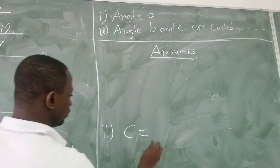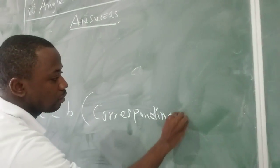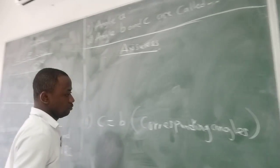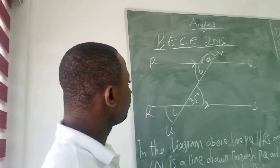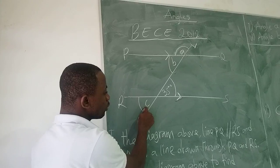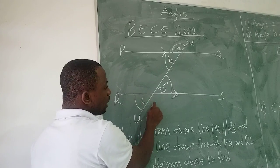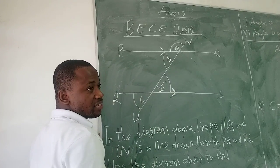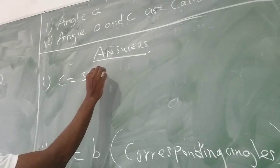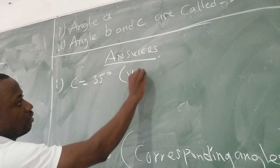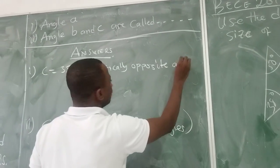C is equal to B — corresponding angles. We can also see that C is vertically opposite to the angle of 35 degrees. So C is equal to 35 degrees, which implies that they are vertically opposite angles.